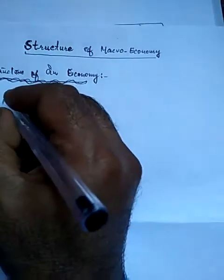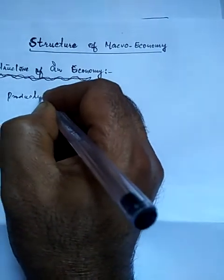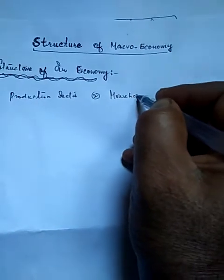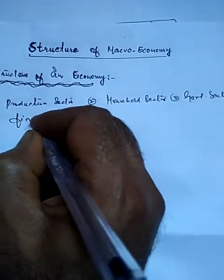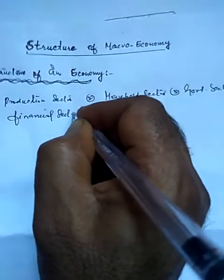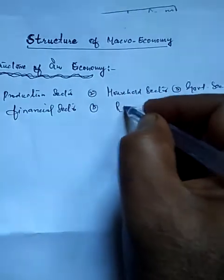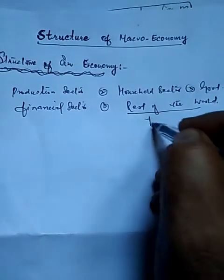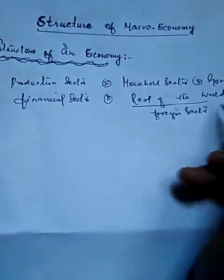What are these sectors? Number one is the producer sector, or production sector. Then we have the household sector. Then we have the government sector. Then the financial sector. And finally we have the rest of the world, also called the foreign sector. These are the sectors which constitute the structure of an economy.